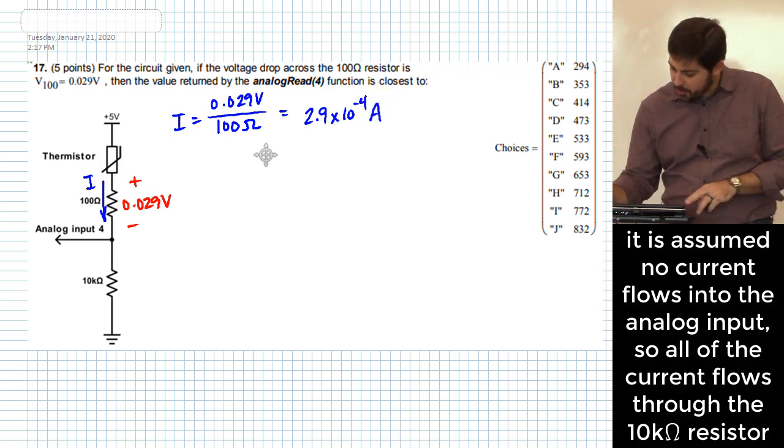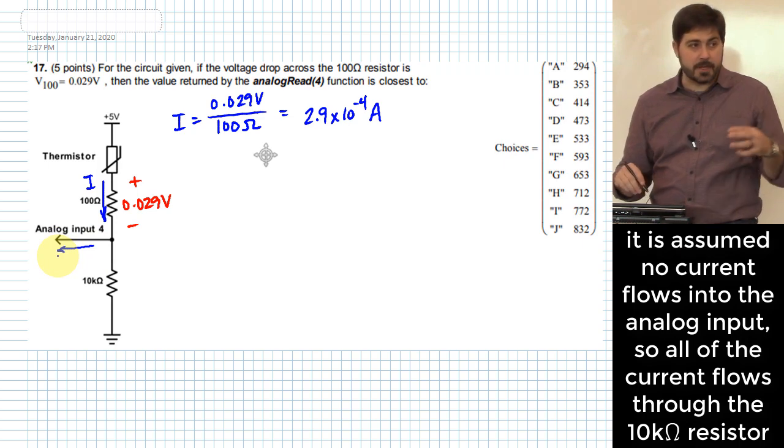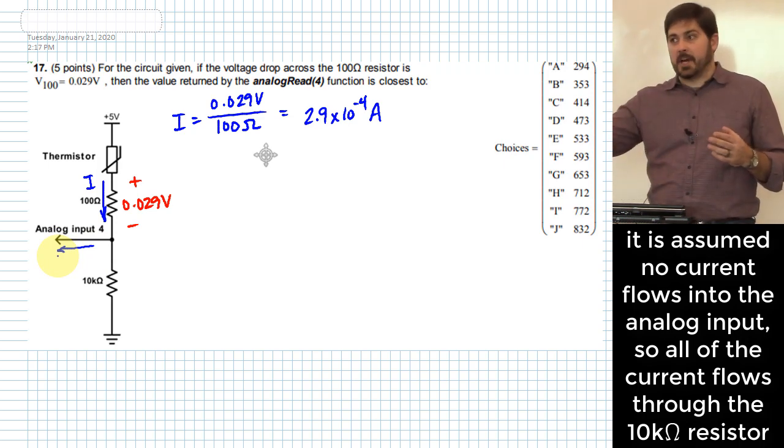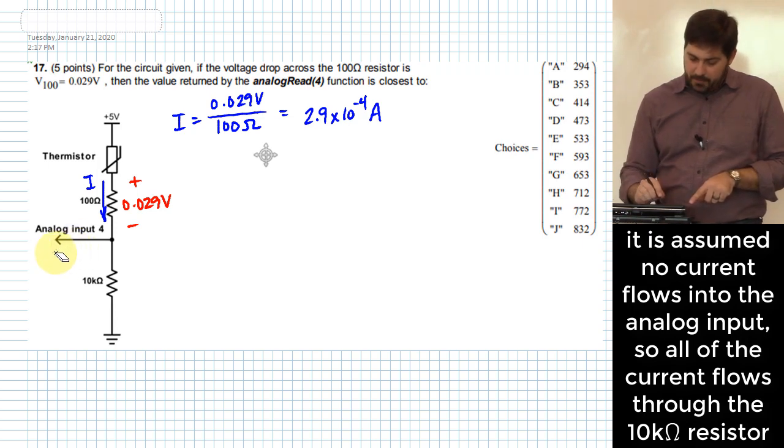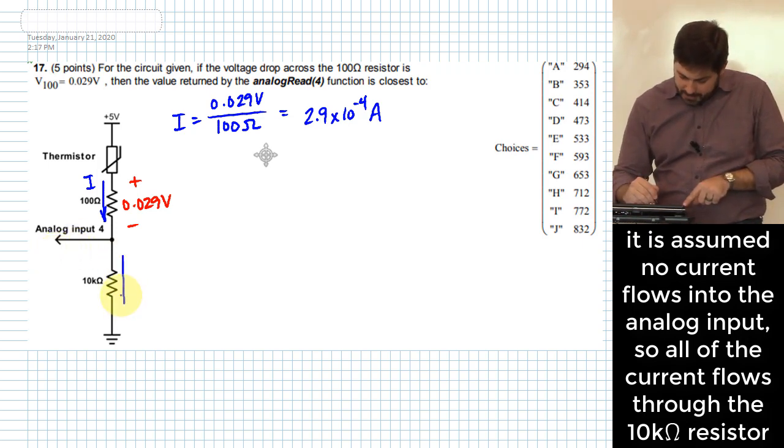That's how much current is also, because no current goes this way. Right? Your analog input pins are assumed to basically not let any current in or out. So no current's going that way, so all of that current has to go down this way.